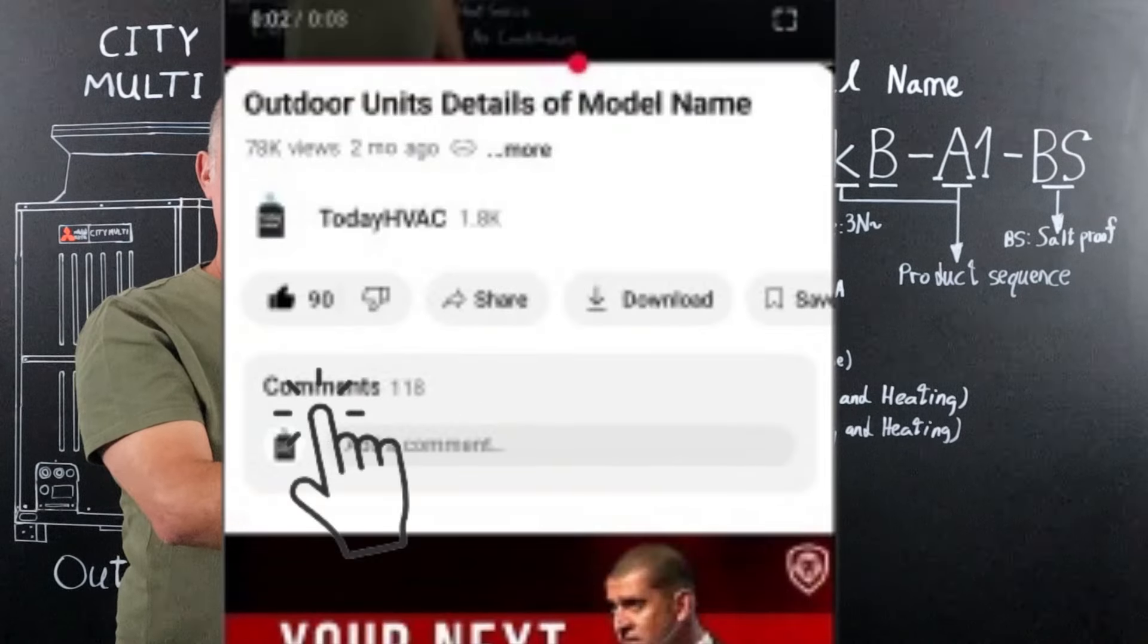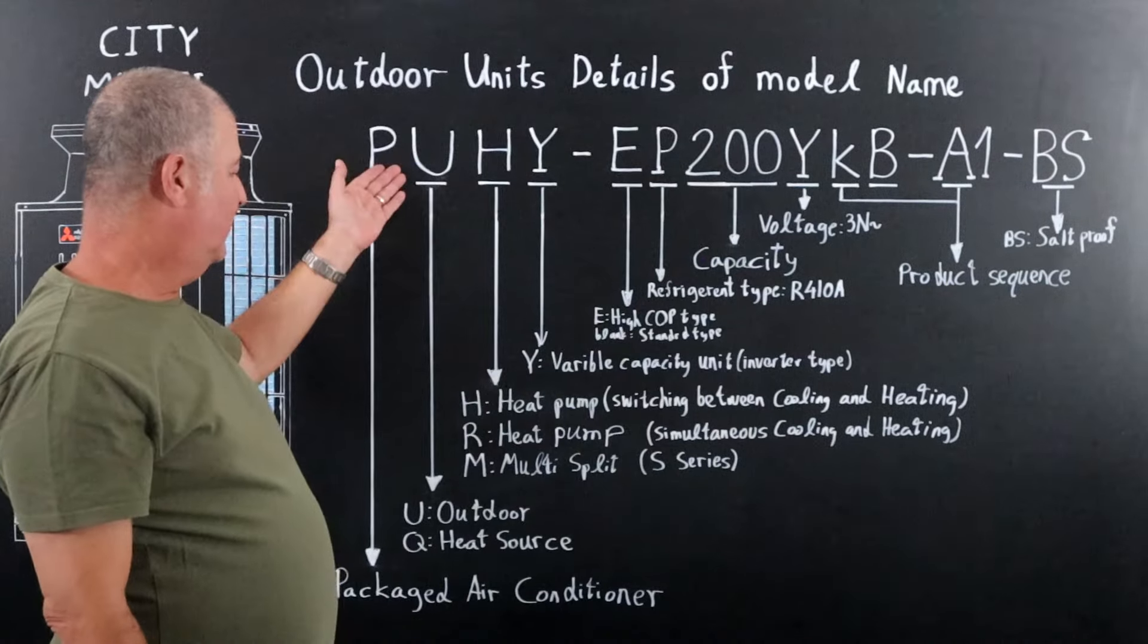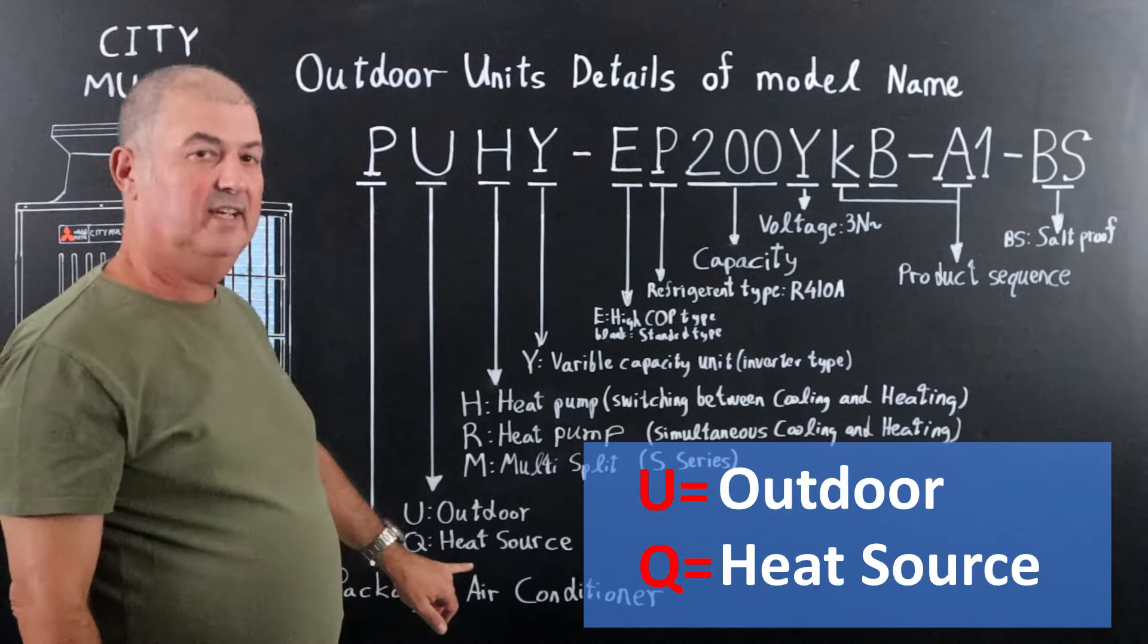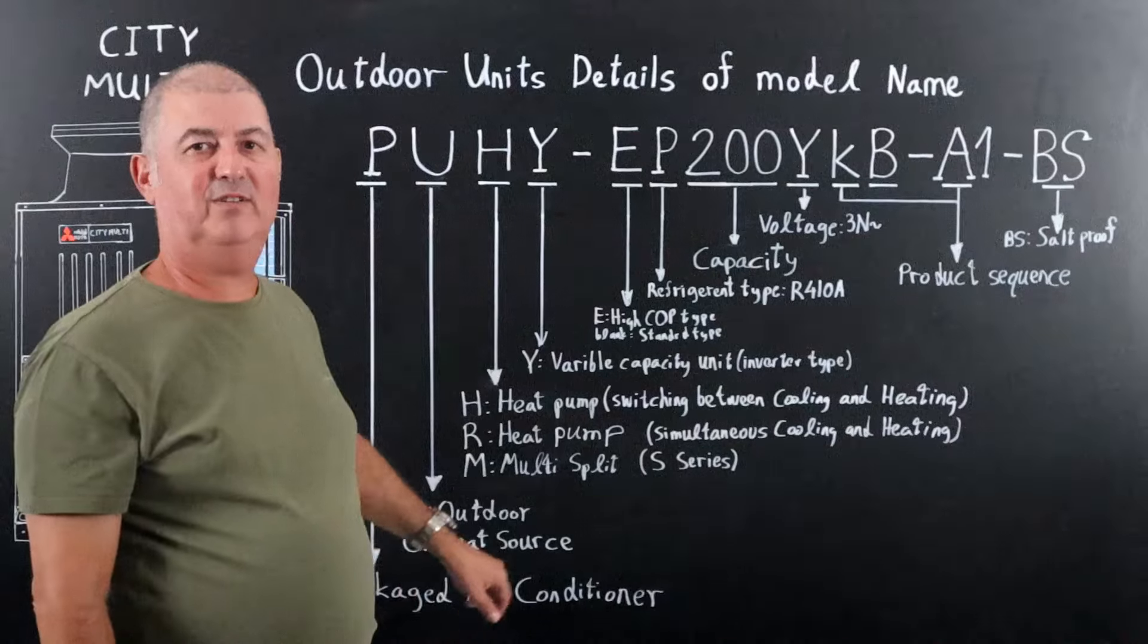The second letter: if it's U, it's for outdoor. If it's Q, it's for heat source unit, as you can see here on the screen.